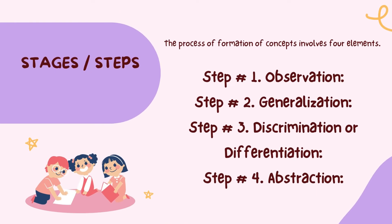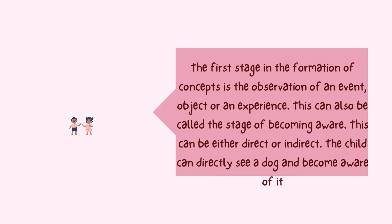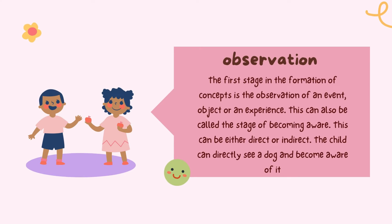Good morning. This is Catherine T. Peña-Florida, continuing Chapter 29. The process of formation of concepts involves four elements. Step 1 is observation. The first stage in the formation of concepts is the observation of an event, object, or experience — also called the stage of becoming aware. This can be either direct or indirect. The child can directly see a dog and become aware of it.